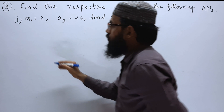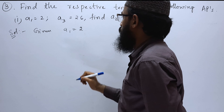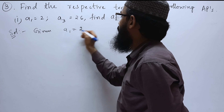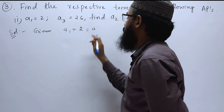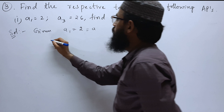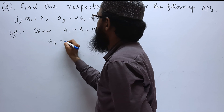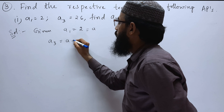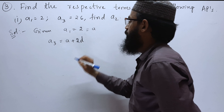Let us write the solution. Given: first term A1 equals 2, so A is 2. And A3 — we can write A3 as A plus 2D.